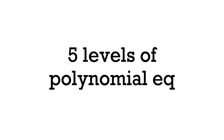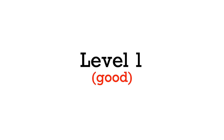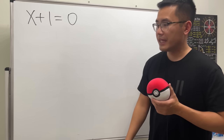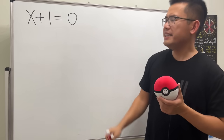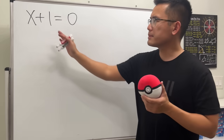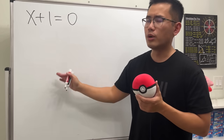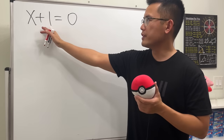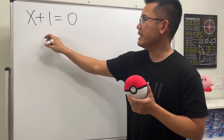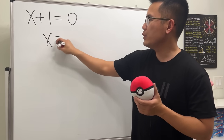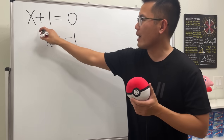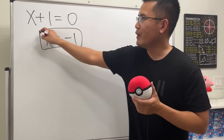Five levels of polynomial equations. Level one: we have this linear equation x plus one is equal to zero. We can just move the one to the other side and we get x is equal to negative one, and then we are done.